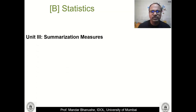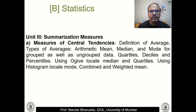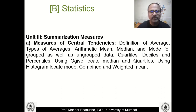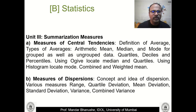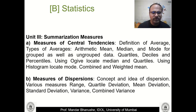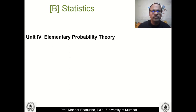In statistics Section 2 we have three units. Unit 3 is summarization measures, covering different types of averages — mean, median, mode for grouped and ungrouped data — then quartiles, deciles, percentiles, and graphical methods for plotting these averages. We shall also see measures of dispersion: standard deviation, mean deviation, and variance.